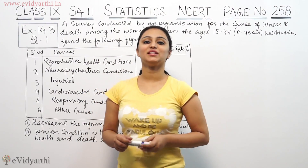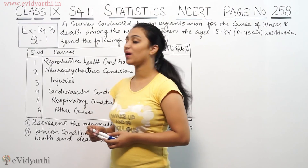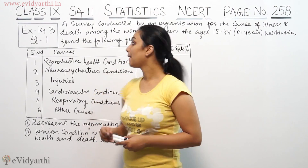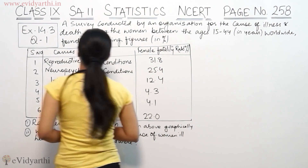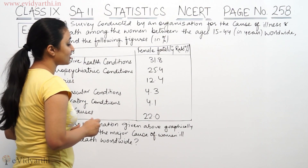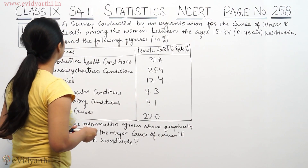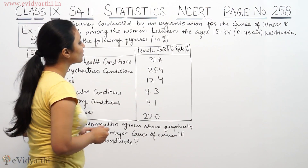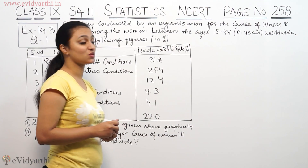Hi, this is Kuchipu with another question of Stenestix, question number 1, exercise 14.3, shape 258 from INCI. This is a subject conducted by Lajanite, an organisation for the cause of illness and death among women between the ages of 15 to 44 years worldwide.